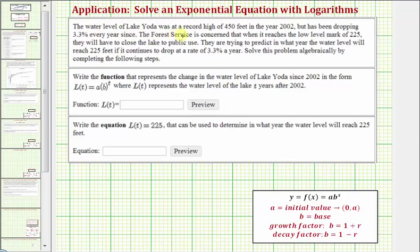The water level of Lake Yoda was at a record high of 450 feet in the year 2002, but it's been dropping 3.3% every year since. The Forest Service is concerned that when it reaches the low level mark of 225 feet, they will have to close the lake to public use. They are trying to predict in what year the water level will reach 225 feet if it continues to drop at a rate of 3.3% a year. We want to solve the problem following the steps below.